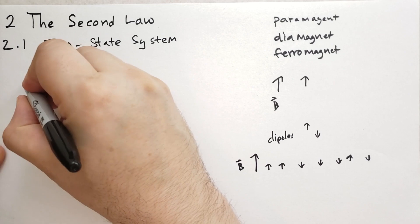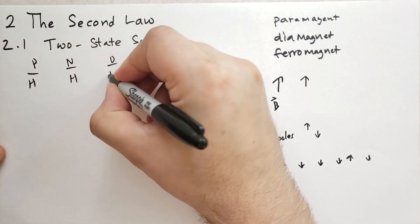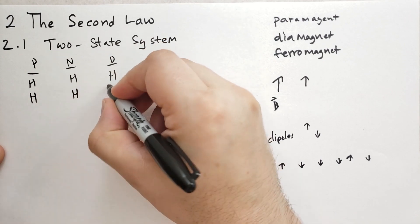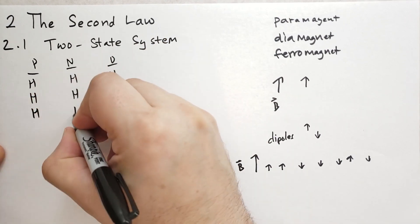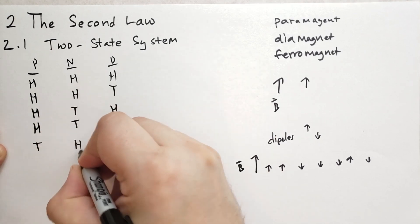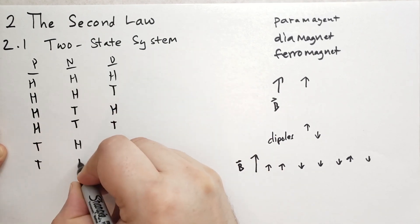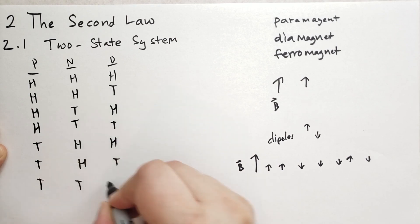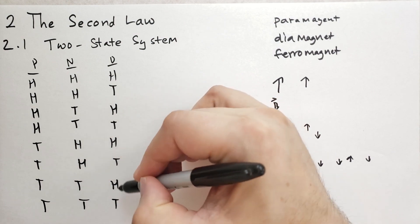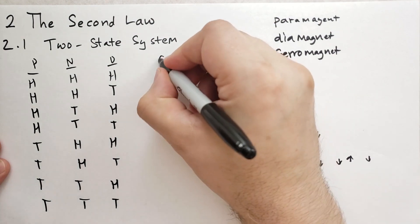So let's write down all the possible combinations. So one combination is that they're all heads. Another is that the penny and the nickel are heads, but the dime is tails, and so on. And if you're familiar with binary, you know how to count all the possible states here. And then t, t, t. And if we count the number of states, we get one, two, three, four, five, six, seven, eight. We get eight states.